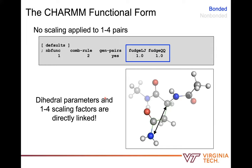One important aspect is these 1-4 or third-neighbor interactions. In CHARMM, these are not scaled—different force fields might apply scaling constants like one-half. These are intimately linked with dihedrals; you can't have one without the other. This is why dihedrals are not transferable across force fields: CHARMM and AMBER have different scaling factors for 1-4 interactions. A dihedral is essentially a correction factor for inaccuracies in modeling non-bonded interactions at short range—there's no fundamental force from quantum mechanics for a dihedral rotation except for gauche interactions among 1-4 pairs.